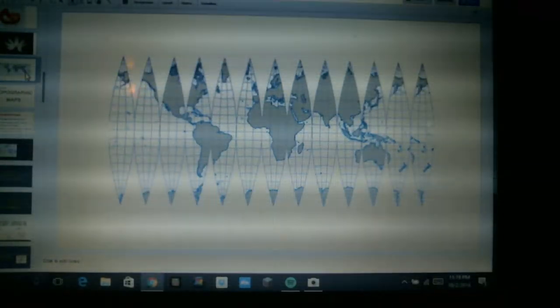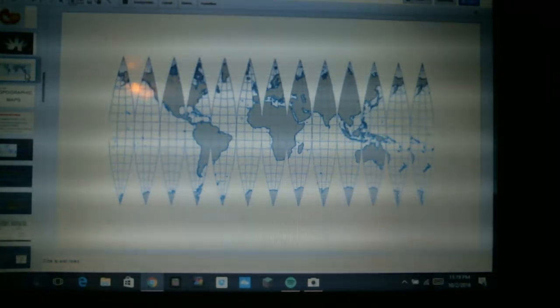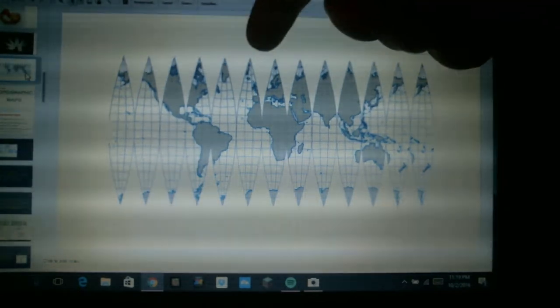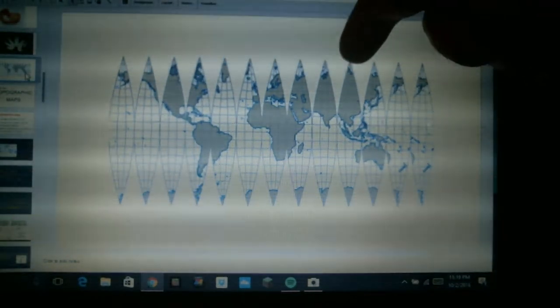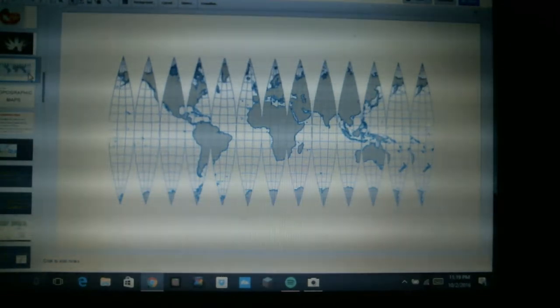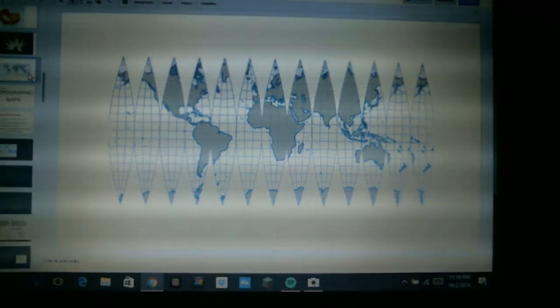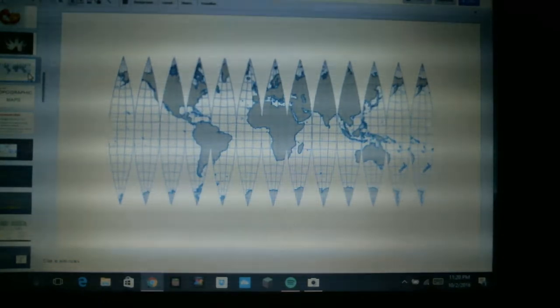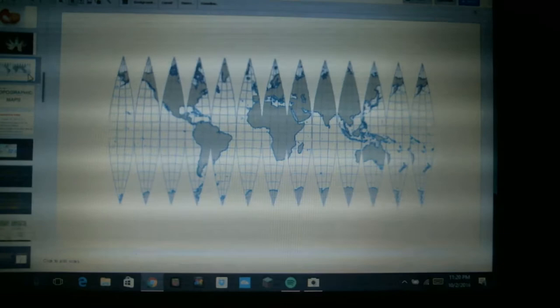This way the shapes of the continents are accurate and the distances are accurate, but the problem is that we have all these gaps in between the pointy sections and people generally don't like that. And so we end up with just the rectangular maps that we're used to. When you do those rectangular maps, especially with the entire world, you have to remember that the shapes of the continents are not exactly drawn correctly and the distances are a little bit more difficult to figure out accurately as well.